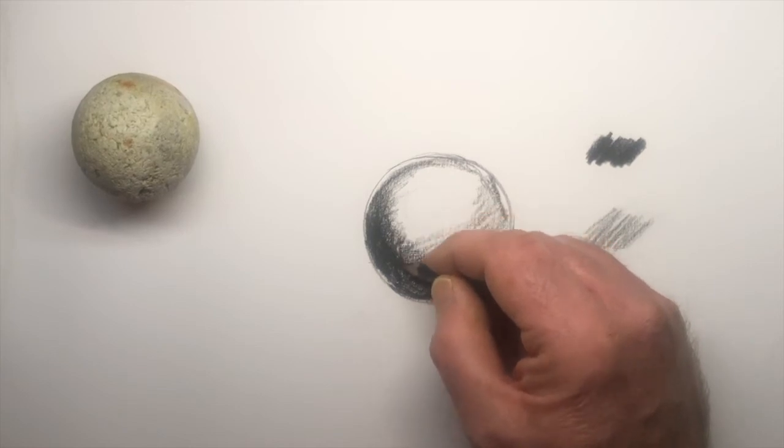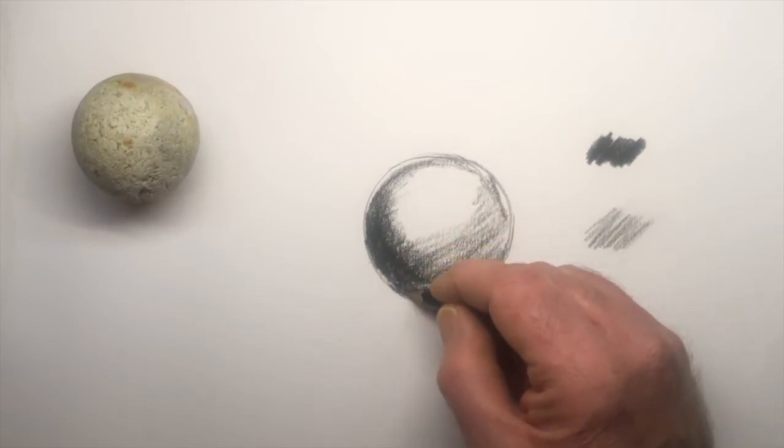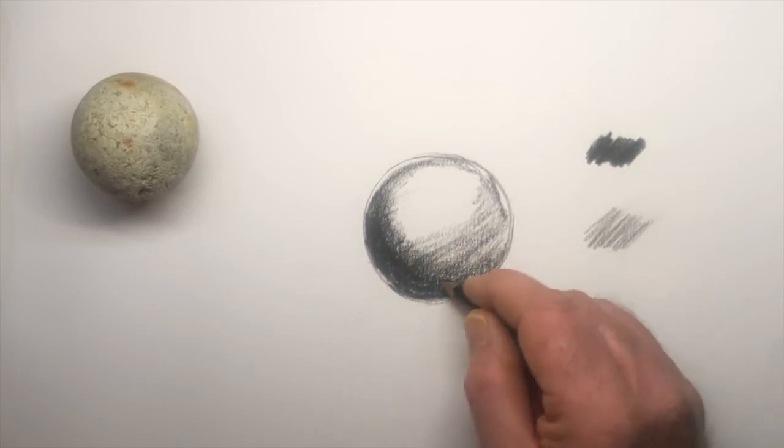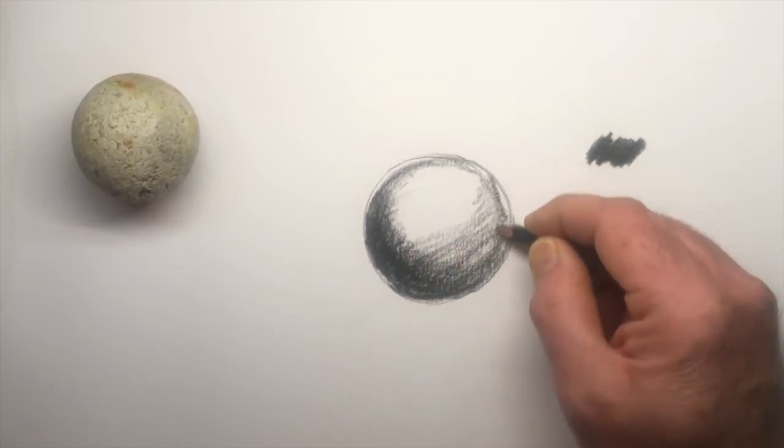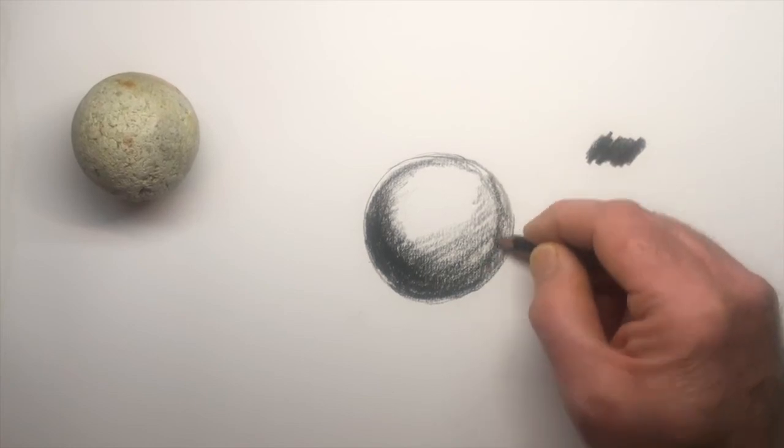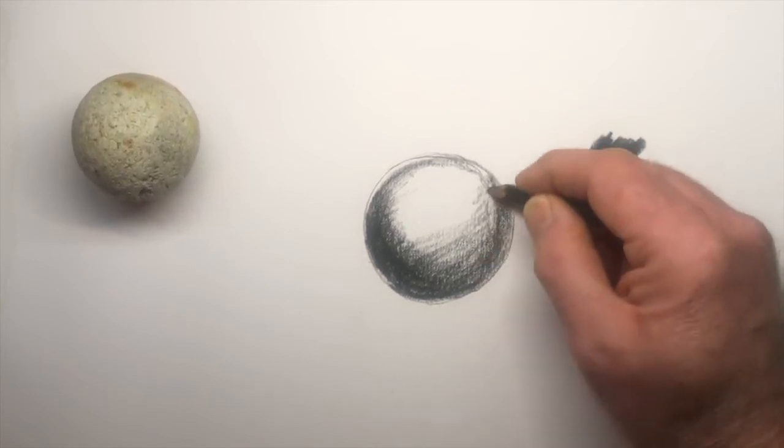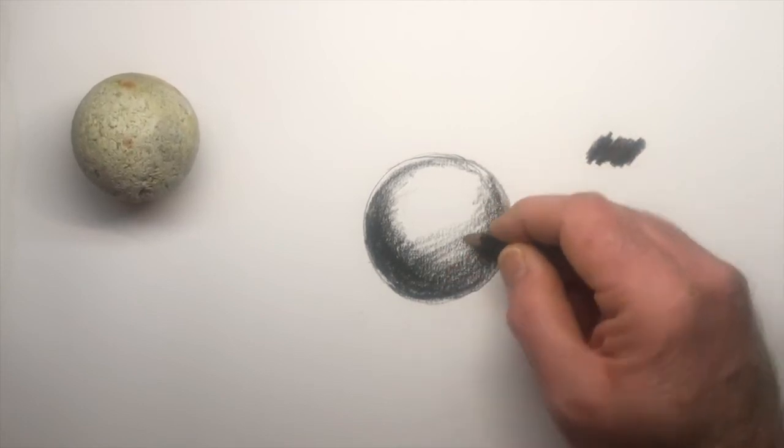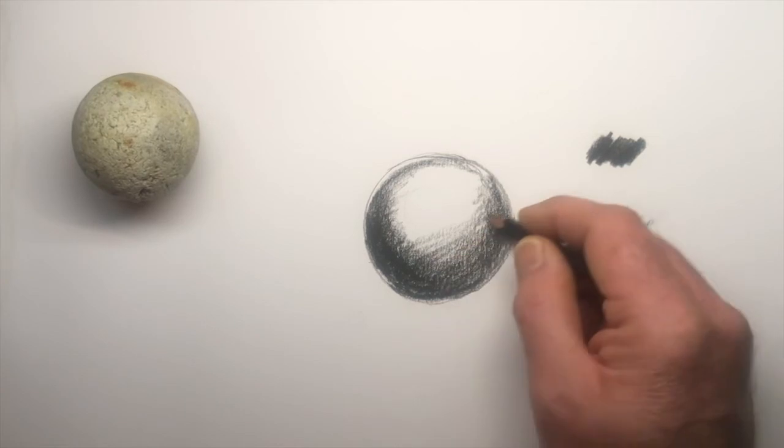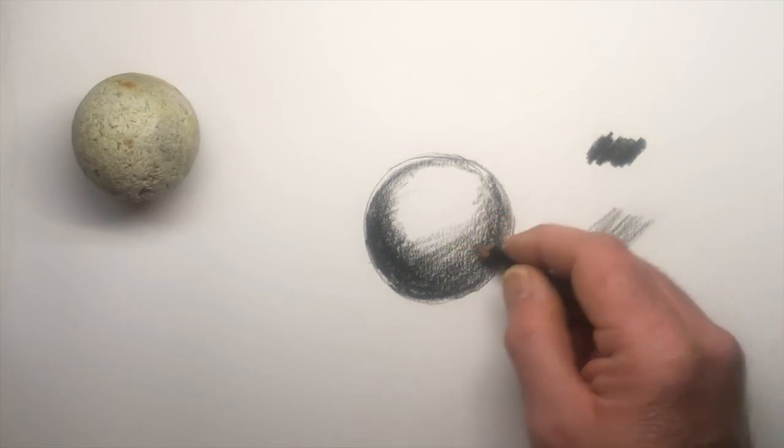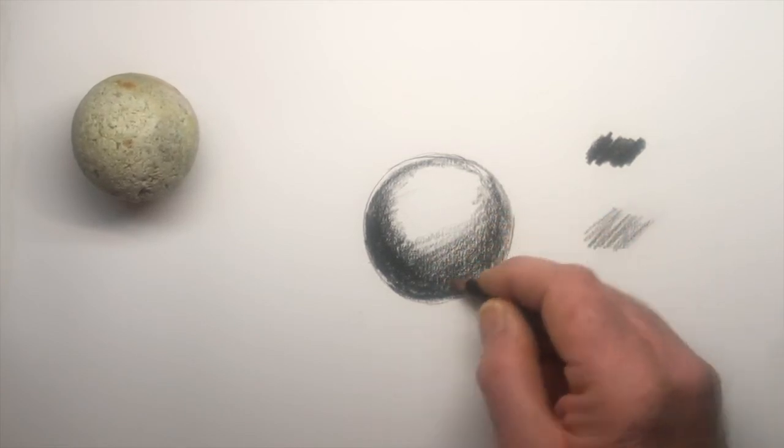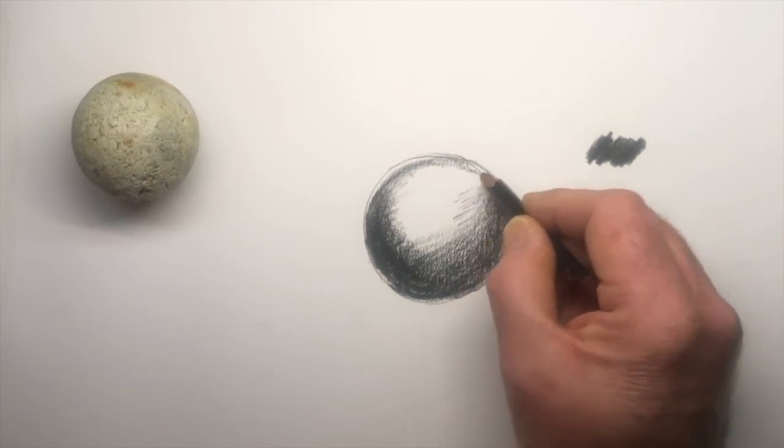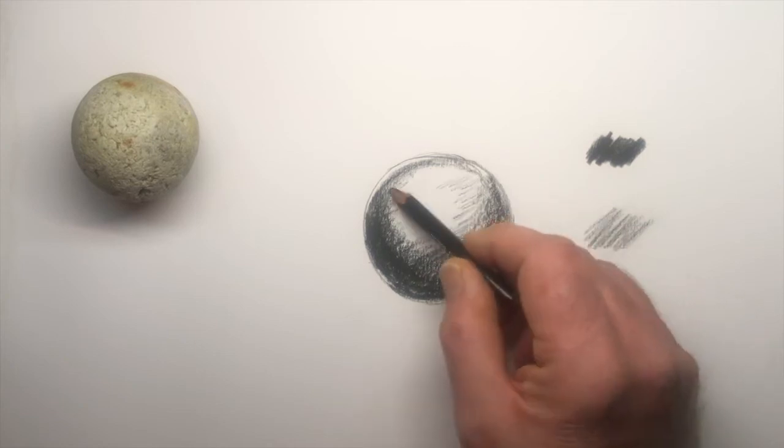Just by blending that in, putting in some dark tones there, a bit there. You can see that it's starting to turn into a sphere now. As I'm moving into the center, I am getting lighter and lighter, so I'm easing off on my pencil.